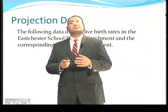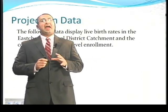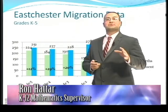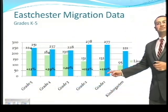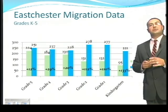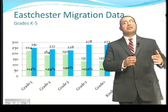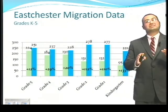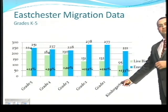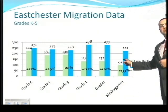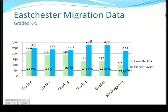The following data display live birth rates in the East Chester School District catchment area and actual grade level enrollments. Looking at kindergarten, there are 221 students in kindergarten this year. In 2005, the year that cohort was born, there were 95 live births in the East Chester School District catchment area. That's a 133% increase in students.